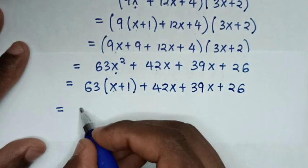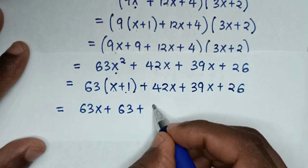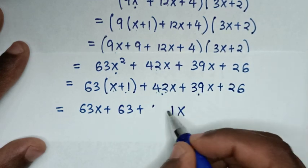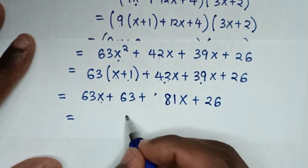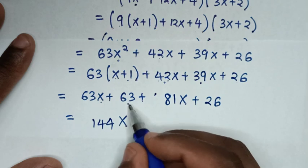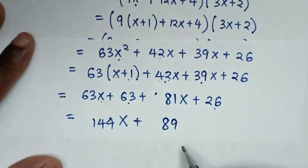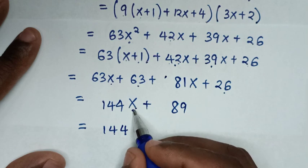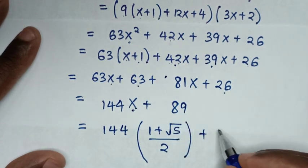Then it will be equal to: 63x plus 63 plus 42x — combining the x terms: 63 plus 42 is 105x, then plus 26. Combining further: 105x plus 63 plus 26 gives us 144x plus 89. Then in the next step, we substitute the value of x, which we first defined as x is (1 plus square root of 5) over 2, giving bracket times 144 plus this 89.